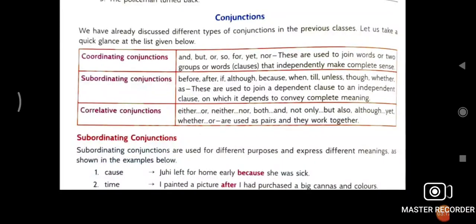Conjunction, what is the definition of conjunction? They are used to join two or more sentences. There are three types of conjunction in here. Coordinating conjunction, subordinating conjunction, and correlative conjunction. Coordinating conjunctions are and, but, or, so, for, yet, now. These are used to join words that independently make complete sense. Independently, both are independent sentence.